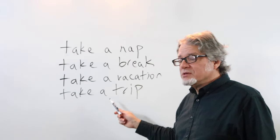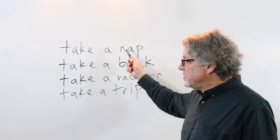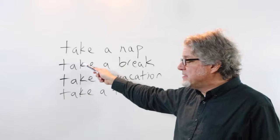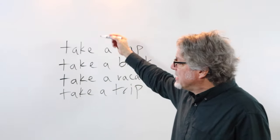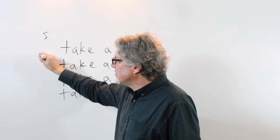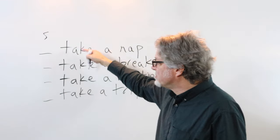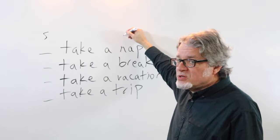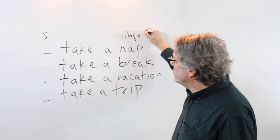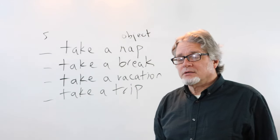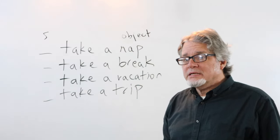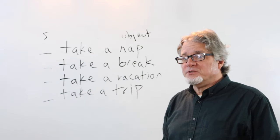All of these nouns in a sentence would be the object of take. So you just have to have a subject here in this position, here's the verb, and then each one of these would be the object. You usually need an object after the verb take.